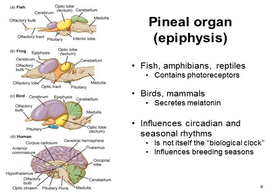The pineal gland, or pineal organ as it's known in some places, differs in function between various species. In fish, amphibians, and reptiles, it contains photoreceptors. In birds and mammals, it secretes melatonin, so it influences our circadian and seasonal rhythms. Although it's not itself a biological clock, it does influence the breeding seasons.